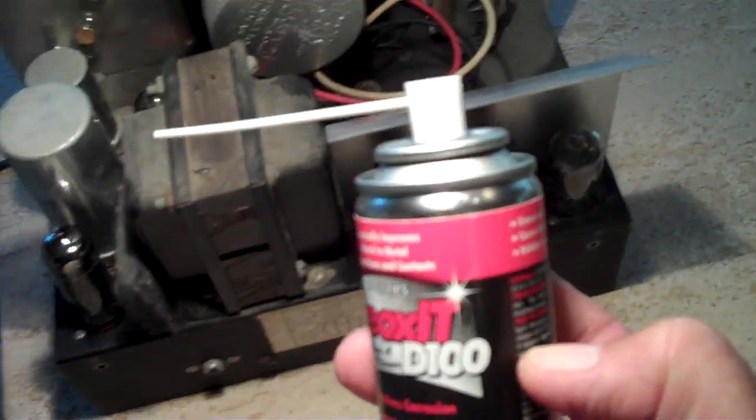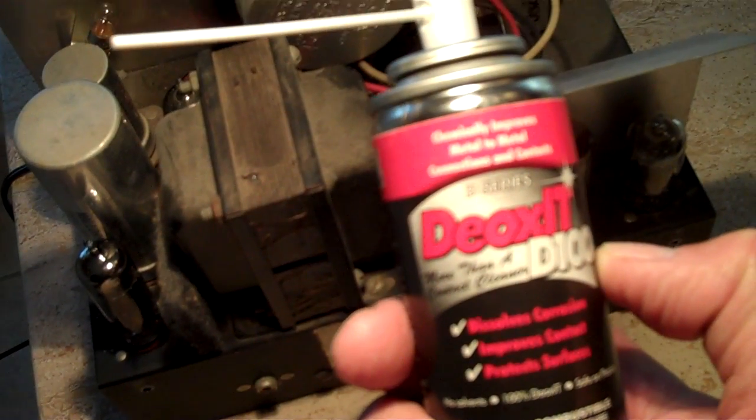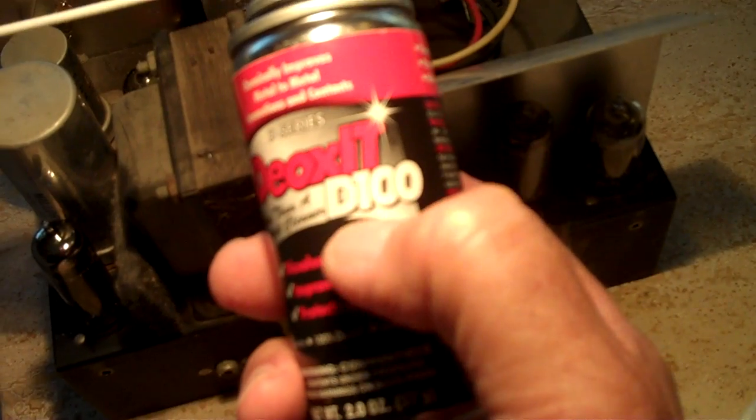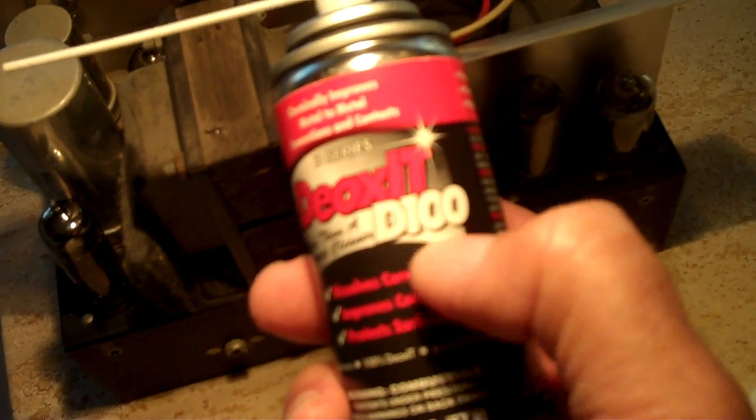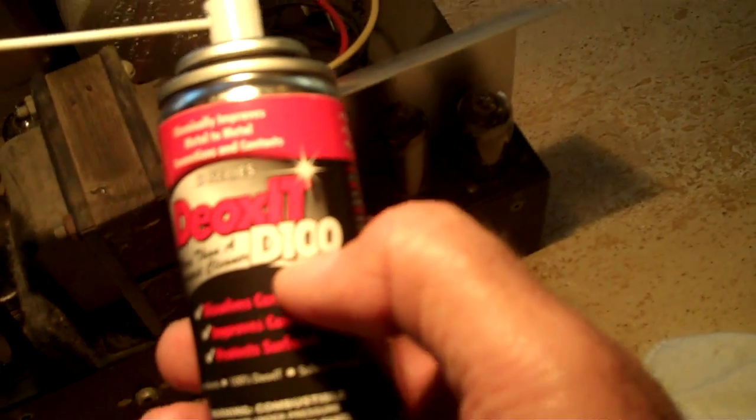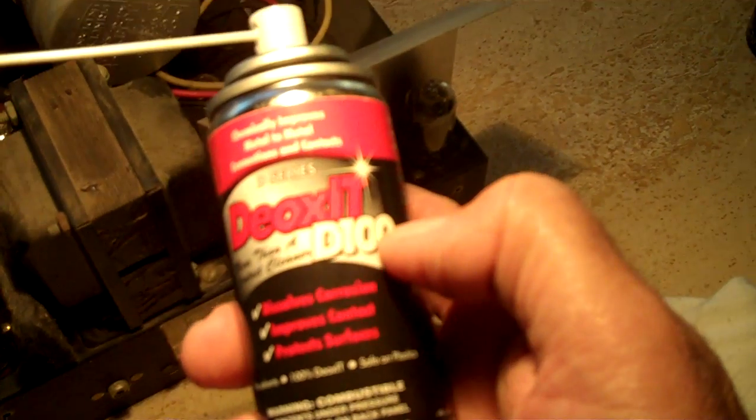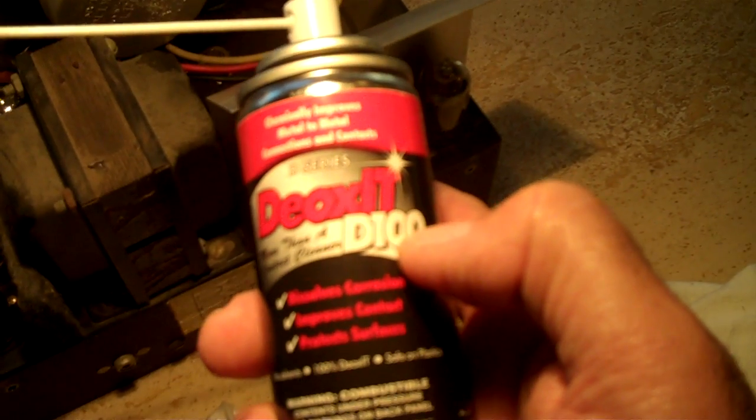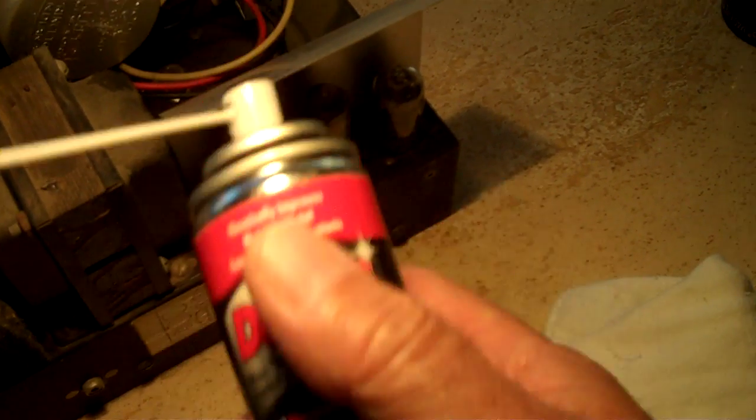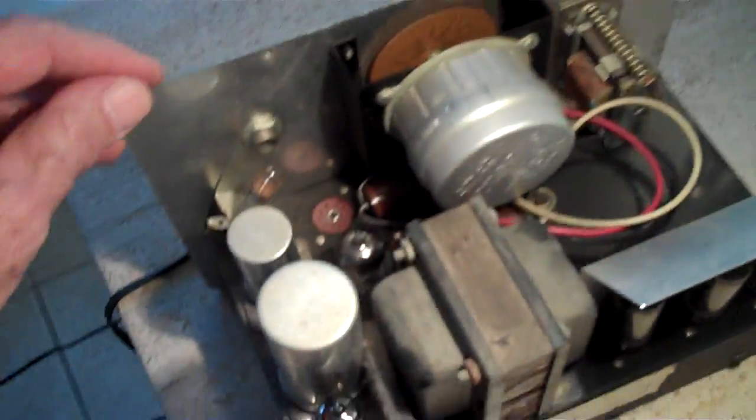Clean all the tubes. Got to have this. This is something you have to have. Don't leave home without it. Deoxit. I get the D100. This is okay in your vintage pots and everything. They have a D5, which is just 5%. This is 100% deoxit. I clean everything electrical with this. It's a miracle. Got to have that.